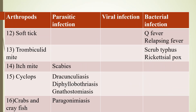Twelfth, soft tick — transmits bacterial infections like Q fever (caused by Coxiella burnetii) and relapsing fever (caused by several Borrelia species). Thirteenth, thrombiculid mite — transmits scrub typhus (caused by Orientia tsutsugamushi) and rickettsial pox (caused by Rickettsia akari). Fourteenth, itch mite — causes scabies. Fifteenth, cyclops — transmits parasitic infections dracunculiasis, diphyllobothriasis, and gnathostomiasis.